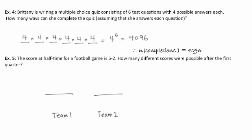Team one scored five goals by the half, so at the quarter they could have scored none, one, two, three, four, or five — so they've got six options. Team two, on the other hand, only scored two, so at the quarter they could have had zero, one, or two. This corresponds to six options for team one times three options for team two. There are 18 different scores that would have been possible after the first quarter.